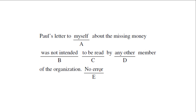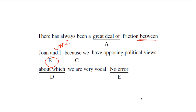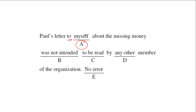Problem four: 'Paul's letter to myself about the missing money was not intended to be read by any other member of the organization.' The sentence uses a reflexive pronoun when it should use an objective one. The word 'to' is a preposition, and rule three says use an objective pronoun when it follows a preposition. So we change 'myself' to 'me.' 'Paul's letter to me about the missing money was not intended to be read by any other member of the organization.'